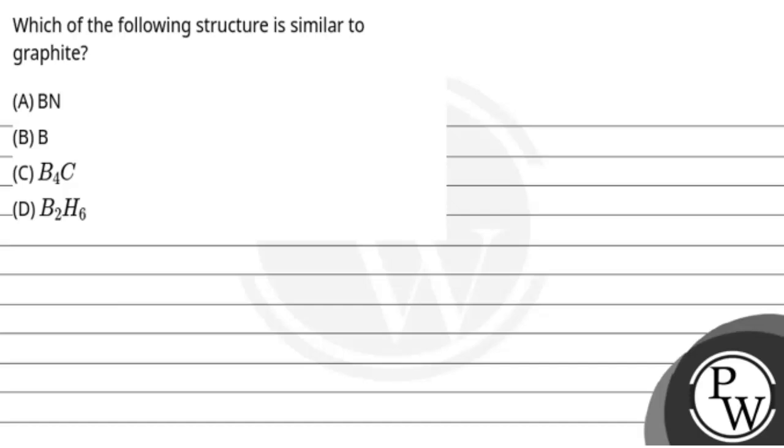Hello, let's read the question. The question says which of the following structure is similar to graphite: BN, B, B4C, or B2H6? The concept is similar to graphite, so here the key concept is structure of graphite.